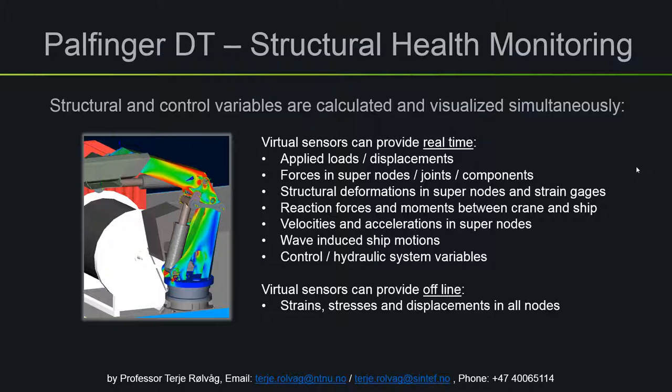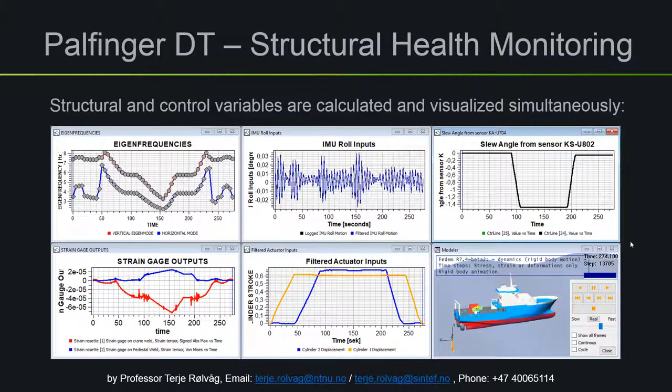We can also visualize wave-induced ship motions and display control and hydraulic system variables not available from the physical asset. We can't do it in real time, but we can offline show strains, stresses, and displacements in all nodes — that means the complete stress distribution as shown in the image on the left. And this is the purpose of a digital twin: to provide additional data that you are not physically measuring, in order to save time and costs.